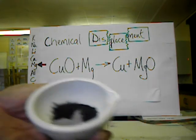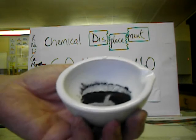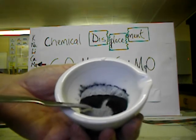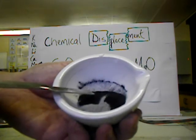I have here, in a mortar, a mixture of magnesium powder, the grey powder, and copper oxide, the black powder.